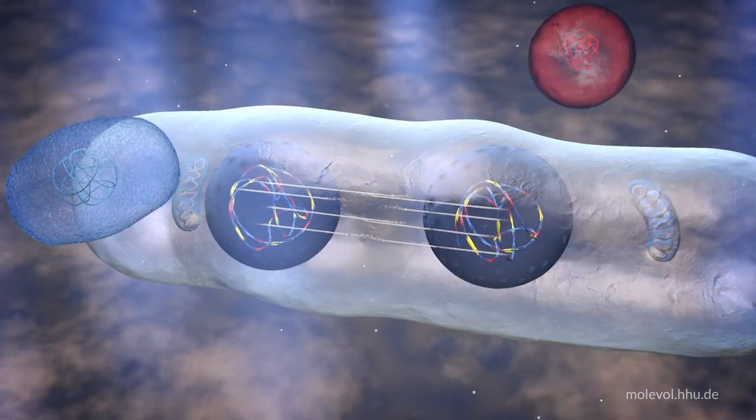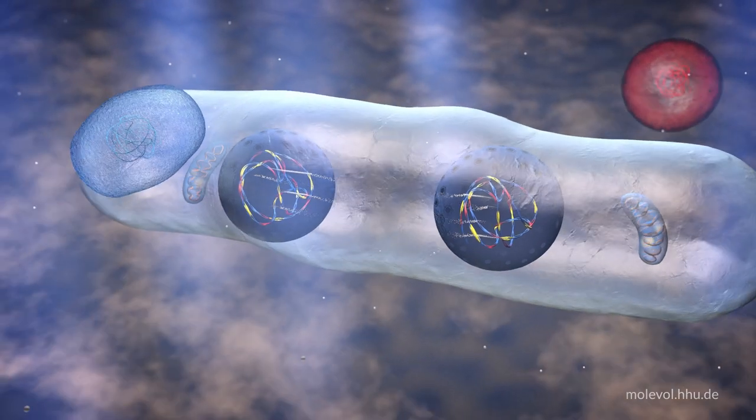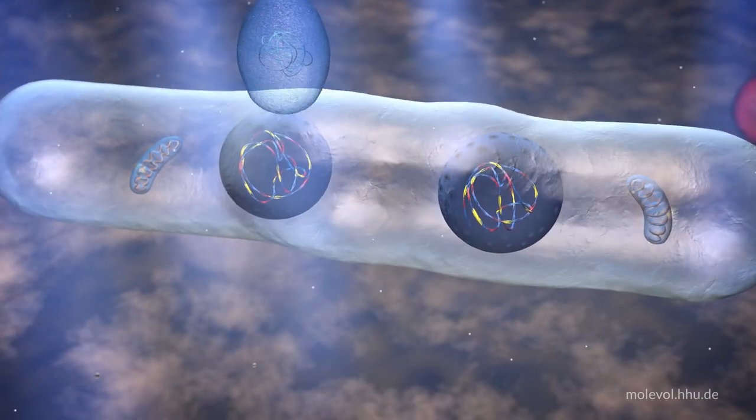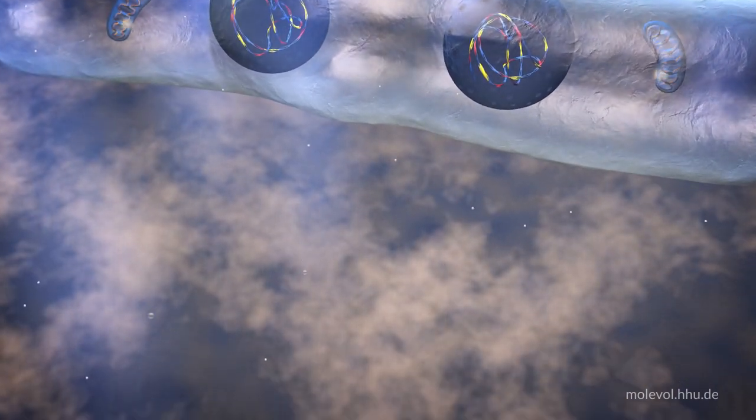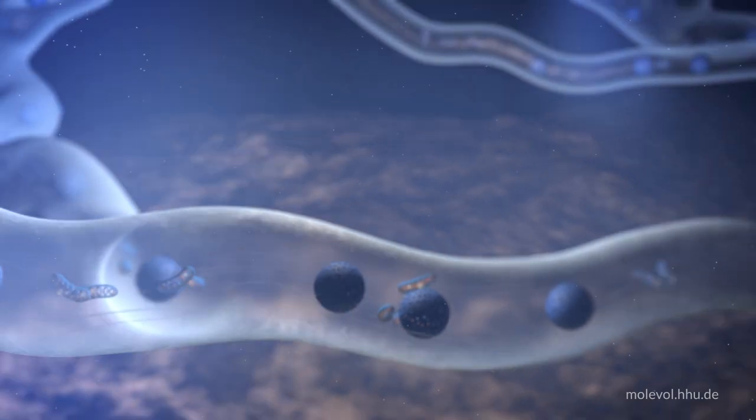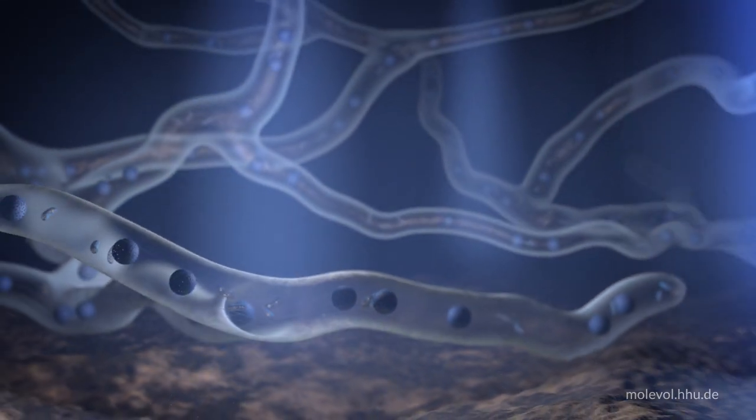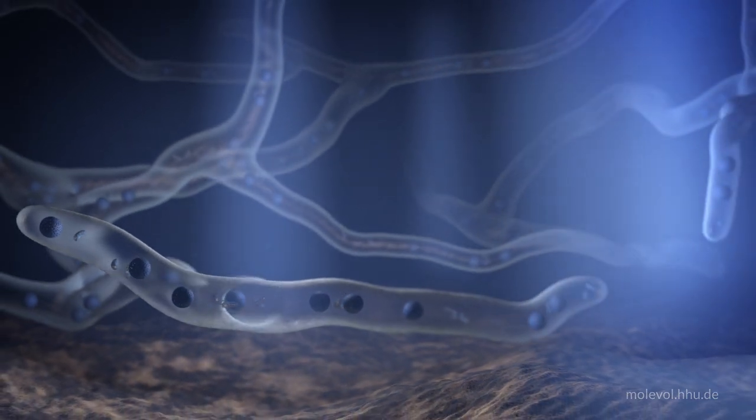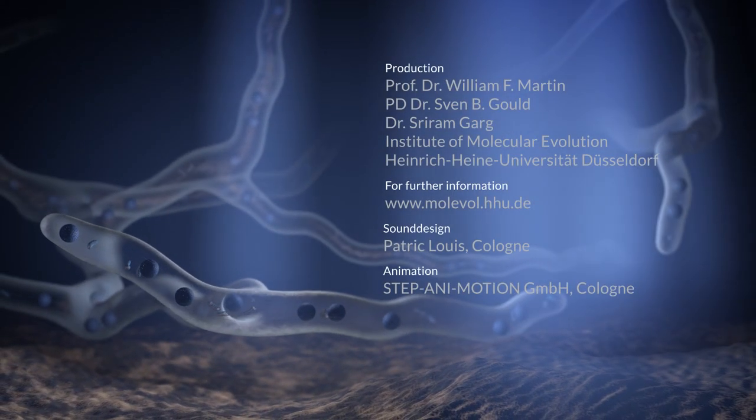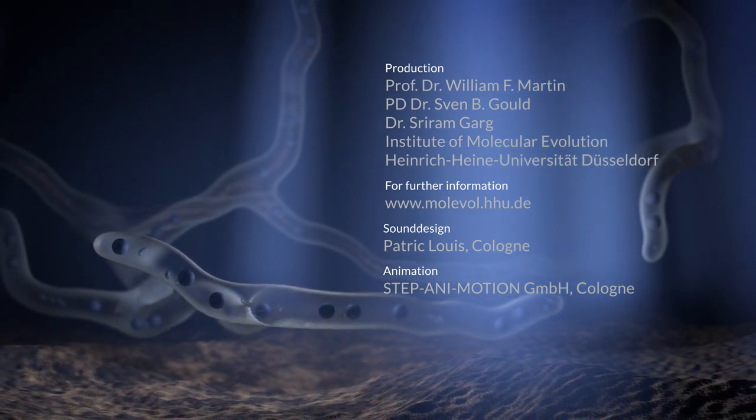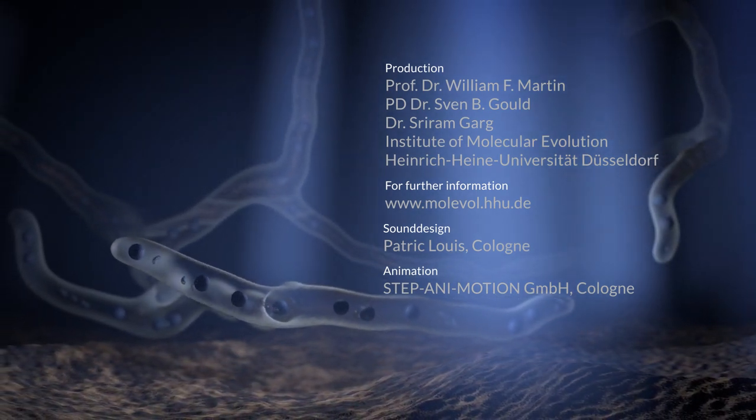This new domain of life started out as two independent cells, an archaean and a bacterium. It gave rise to the most successful inventors of novel cell shapes and novel cell complexity, the eukaryotes. The very first members of the eukaryotic lineage were likely spore-forming filaments that could live with or without oxygen. From such humble beginnings, all complex life arose, and one fateful endosymbiosis made it possible.